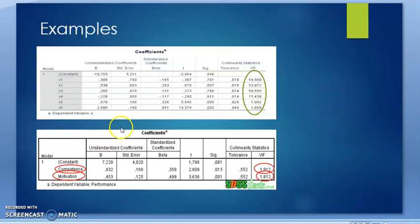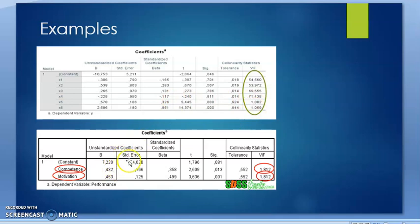There are some examples regarding the VIF in SPSS output. The first one shows that some of the predictors have more than 10 VIF value, but there are two variables less than 10. In the second example, between competency and motivation, we can see that the value of VIF is less than 10.